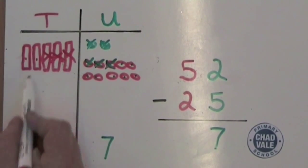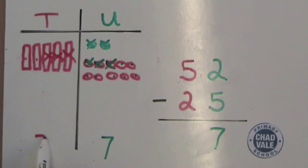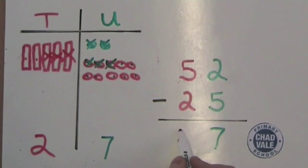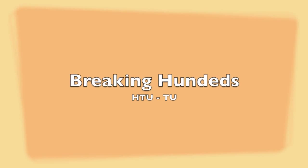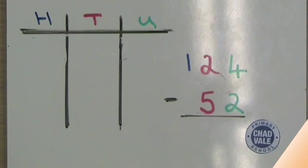We count how many are left and write these in the tens column. We can also use this technique to break up hundreds back into towers of 10.